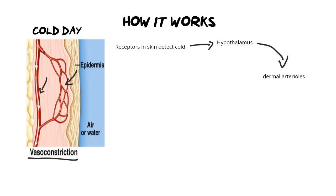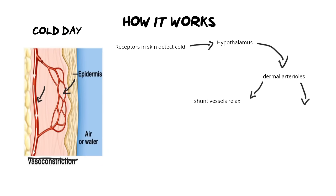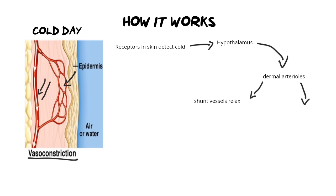In the dermal arterioles there are two kinds, and therefore two responses. The first involves the shunt vessel, which is a deeper blood vessel — the bigger ones at the bottom of the diagram. Those shunt vessels relax, and when they relax they divert more blood into the subcutaneous layer. In other words, more blood is pushed down into the fatty layer. And as we know, fat is an insulator, so we keep the heat in there.